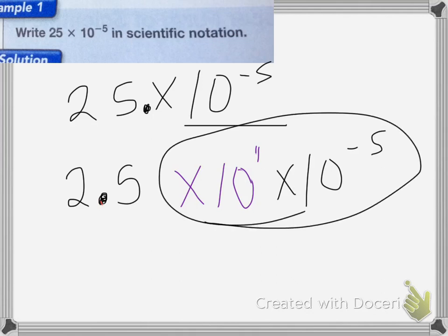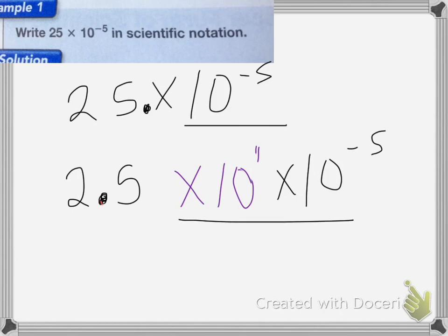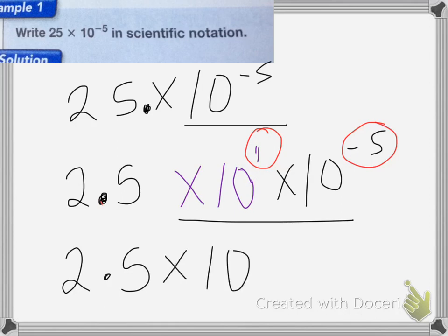So now I need to combine these terms. Remember, when you multiply two 10 powers, you're going to add the powers together. So if you think about it, I have 2.5 and I'm moving one place to the right and five places to the left. So I end up with 4 places to the left. So I end up with 2.5 times 10 to the negative 4th power.